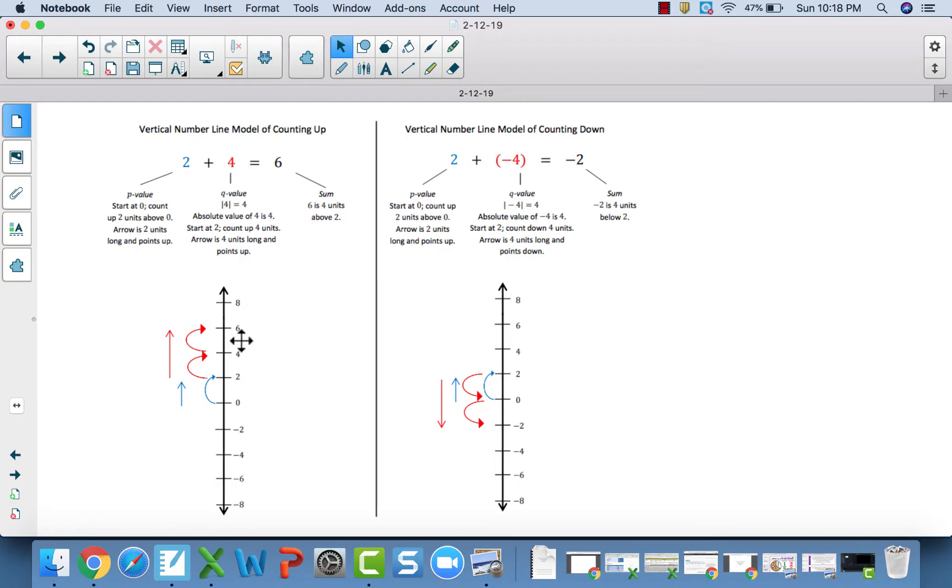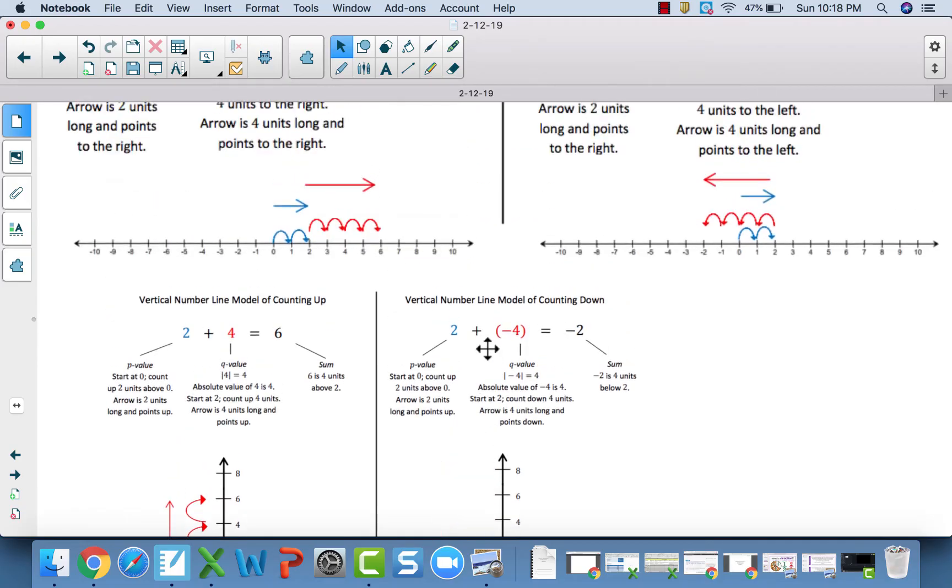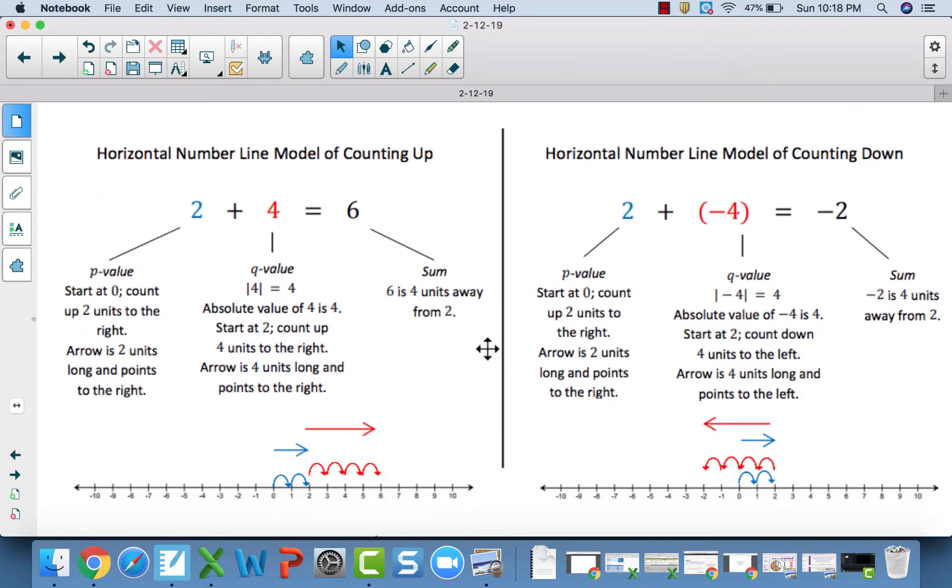Now if we look at this vertically, if you're adding, you count up, literally up, right? Because there are positives. If you're adding positives, you're literally counting up. Then when you add a negative, you're actually counting down on a vertical number line because your negatives are down. So that's just a visual representation, an in-depth look at what's happening. But really we're looking at this distance idea, the fact that 6 is 4 units away from 2, and negative 2 is 4 units away from 2.